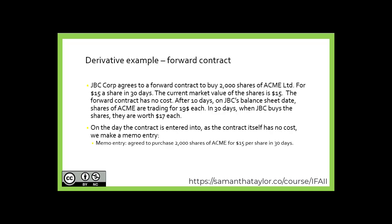Let's look at an example. JBC agrees to a forward contract to buy 2,000 shares of Acme Limited for $15 a share in 30 days. The current market value of the shares are $15 each. The forward contract has no cost. After 10 days on JBC's balance sheet date, shares of Acme are trading for $19 each. In 30 days, when JBC buys the shares, they're worth $17 each.